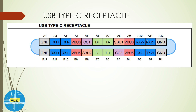Looking at the 12 pins: if you connect one side, the data-plus and data-minus on the top (A-side) will work, and the other side will be blank. These are labeled A1 to A12. Similarly, if you reverse it, B1 to B12 will work, with data-plus and data-minus functioning on the B-side, while A data-plus and A data-minus won't work.